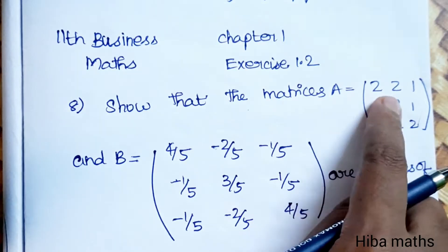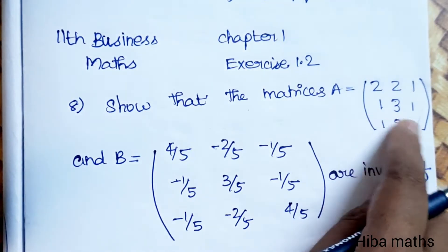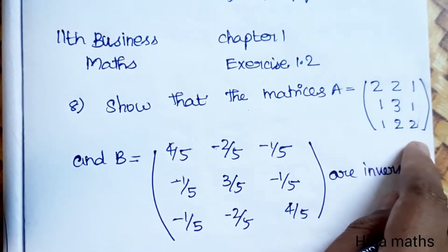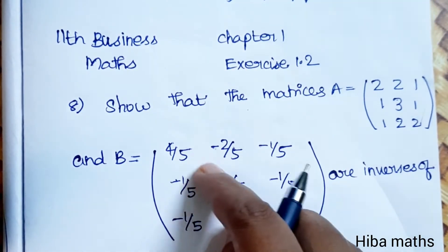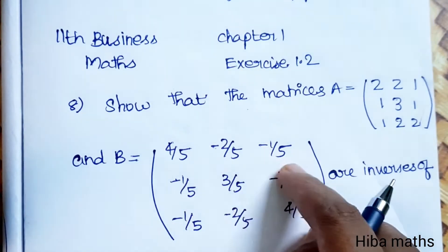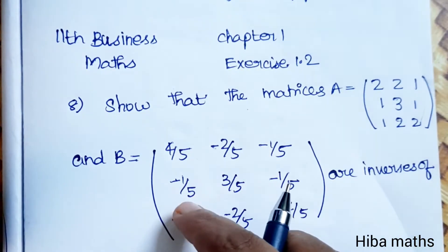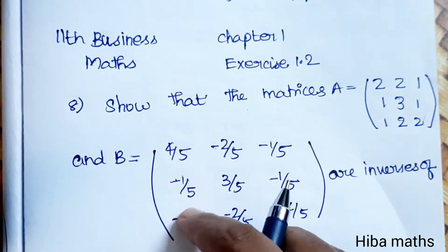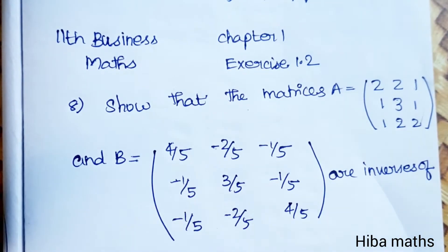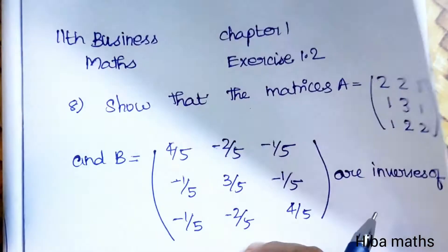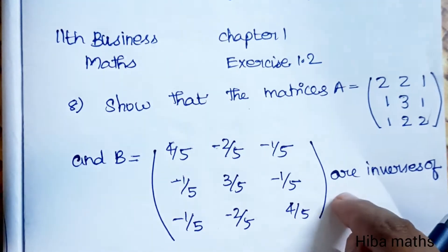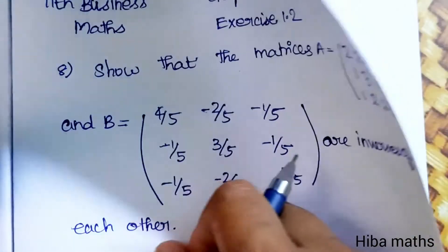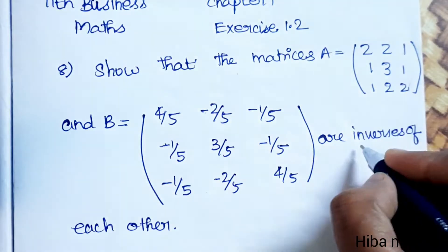A is equal to the matrix [2 2 1; 1 3 1; 1 2 2] and B is equal to [4/5, -2/5, -1/5; -1/5, 3/5, -1/5; -1/5, -2/5, ...] — inverses of each other.